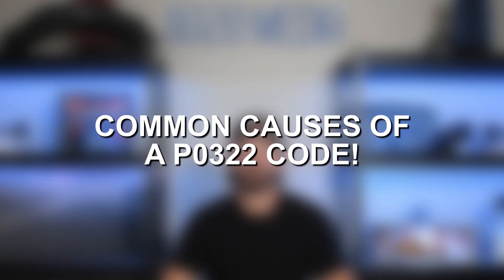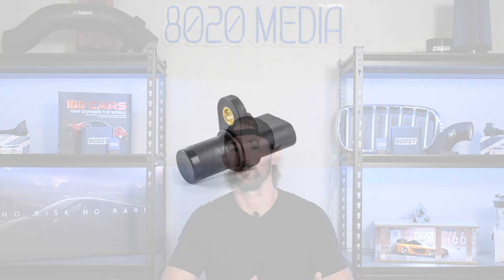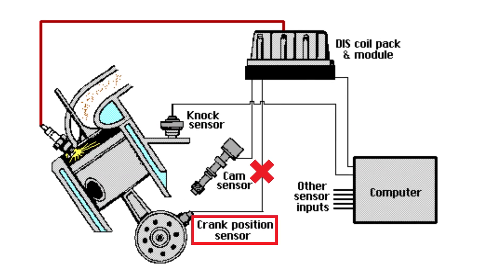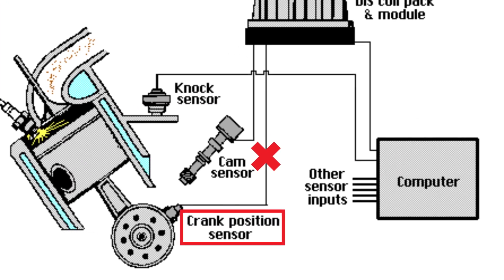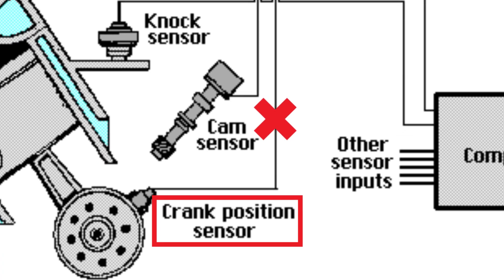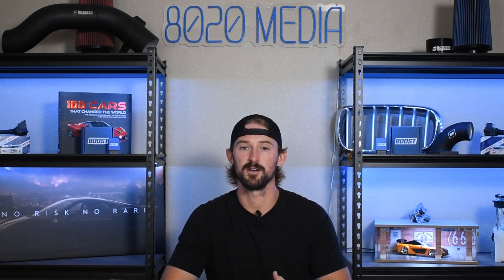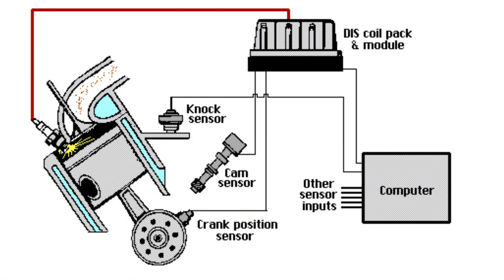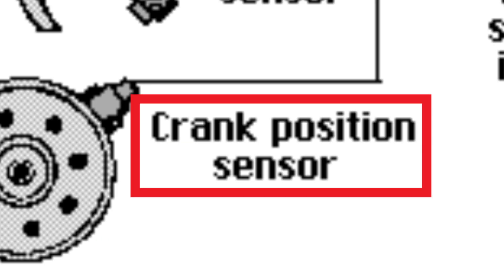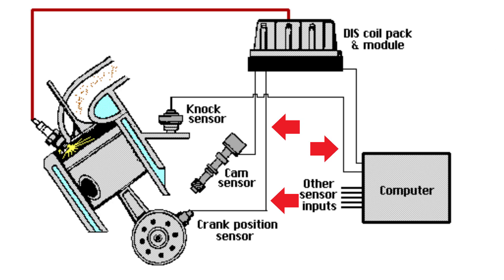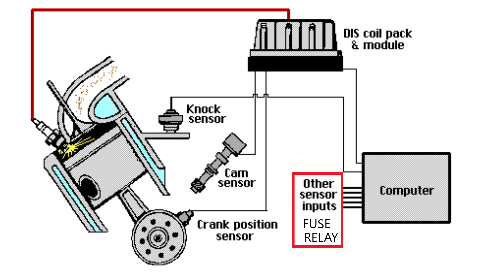Common causes of a P0322 are going to be specific to the crankshaft position sensor, but this code means that the engine's computer is not receiving any signal from it — it basically thinks the engine is not moving, or that RPMs are zero. We can really break the common causes down to two things: the crankshaft position sensor itself, or something to do with the wiring — which could be the wires that run to the sensor, or an issue with a fuse or a relay.